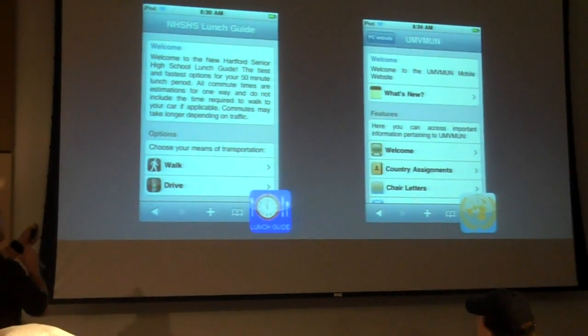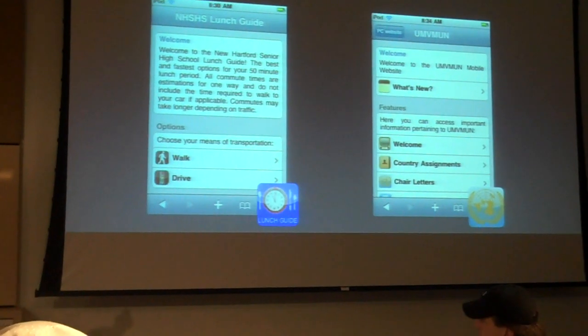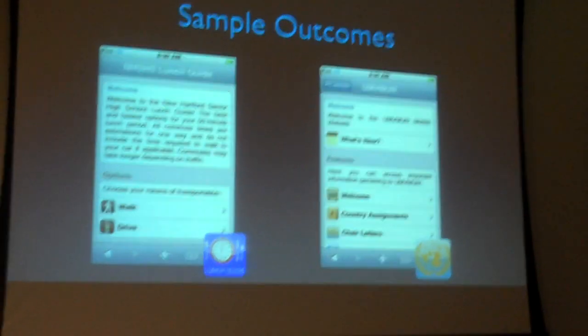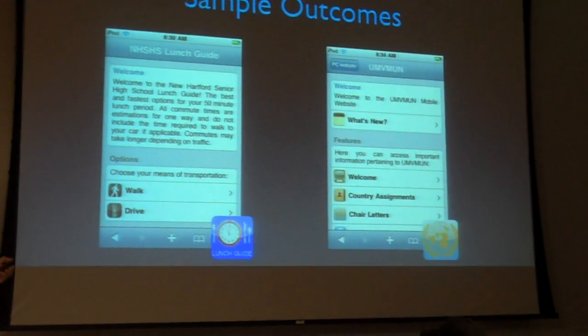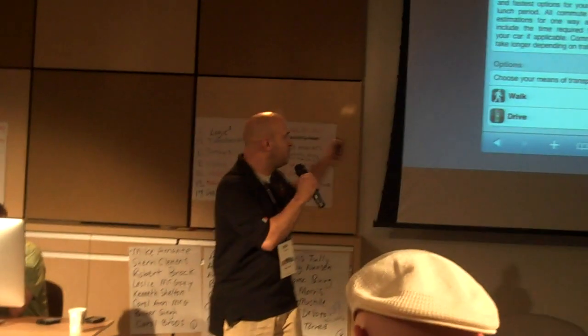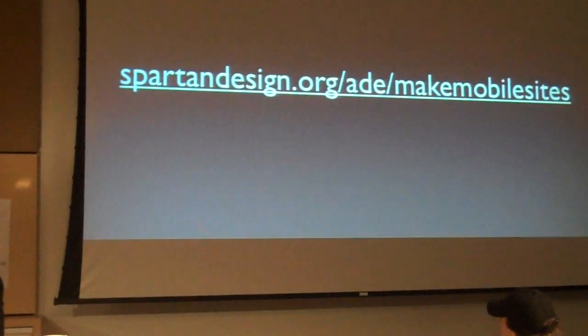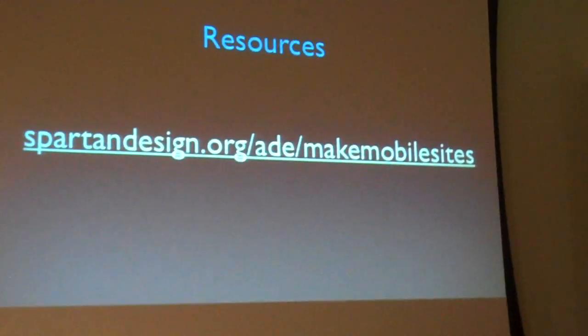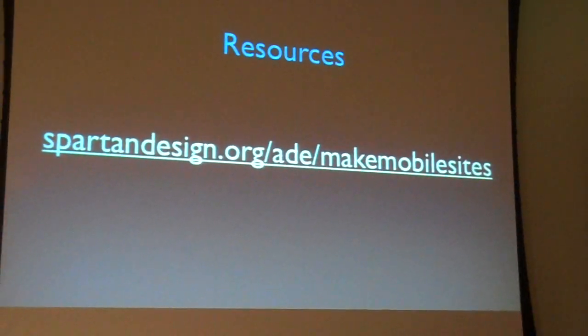Here are two sample outcomes. One — a lot of our students go off campus for lunch — so here is one that is a guide that talks about all the eateries that people can walk to or drive to in the area, with directions, Google Map integration. You can call the restaurant. It had menus embedded. This one's for our Model UN. If you go to this website right now, that is not a mobile site, but I've listed that and a ton of other resources there for you to use.